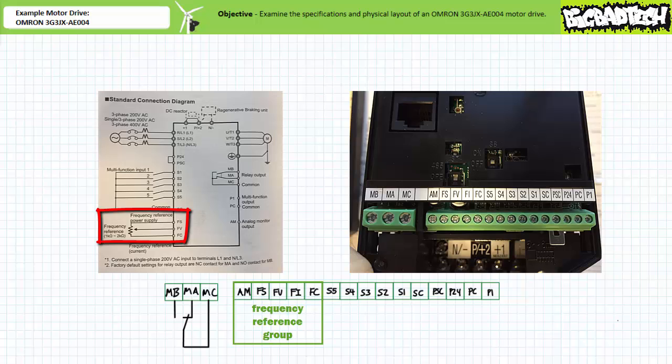As the position of the external speed potentiometer is changed, so too will the analog voltage input signal at the FV terminal. FI is an alternative frequency reference input that rather than using analog voltage signal from 0 to 10 volts, it's anticipating an analog current input from 4 to 20 milliamps. Additionally, the frequency reference group also includes an analog monitor output, AM. Depending on the program function, AM can provide a proportional representation of either the frequency or the current output by the drive.